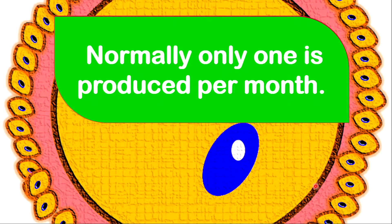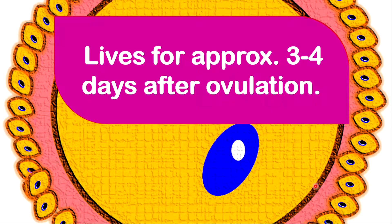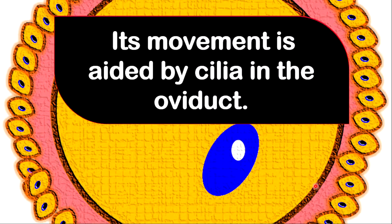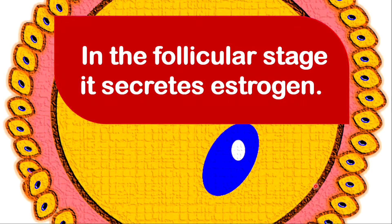Under normal circumstances, only one egg is being produced per month or an average of every 28 days. An egg can live for approximately 3 to 4 days after ovulation. An egg cannot move on its own. However, its movement is aided by cilia that are located in the oviduct, otherwise called the fallopian tube.